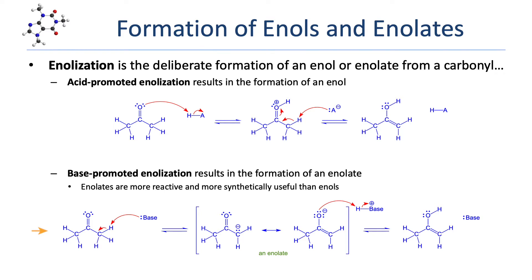When using particularly strong bases, the protonation of the oxygen is not possible, and the enolization results in the formation of an enolate rather than an enol. Note that, like tautomerization, enolization requires that the carbonyl have at least one alpha proton, and that the two steps from both acid- and base-promoted enolization are the same — it's just the order of the steps that's different.